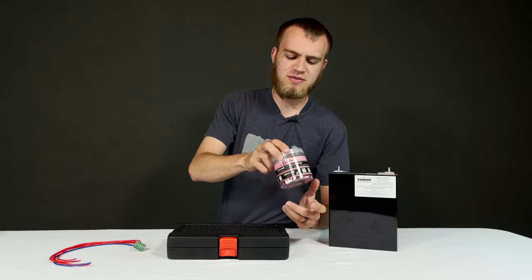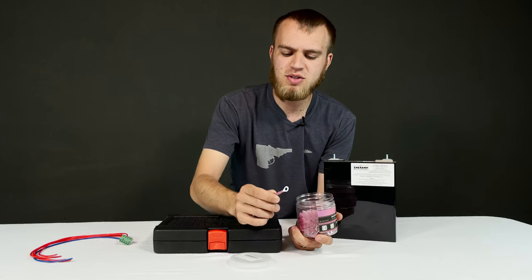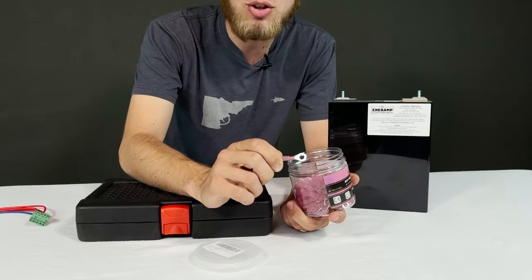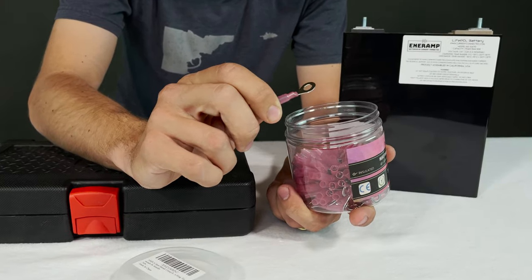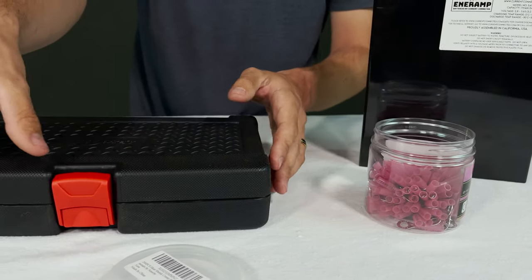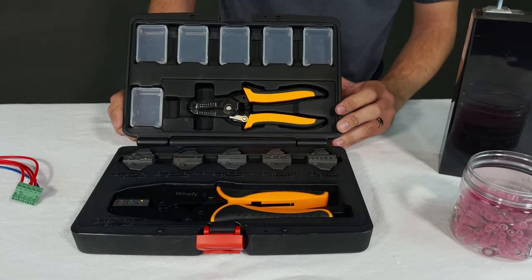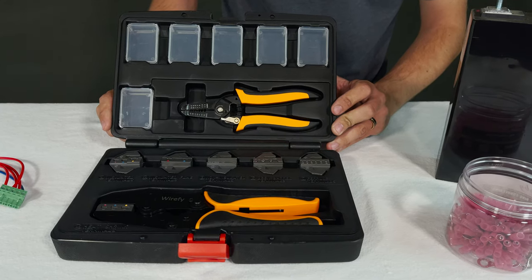In the case of today's video, we're using these crimp terminals. Now these ones are fancy and they have heat shrink tubing as part of them. And we also have a crimping tool that we're going to be showing and that is here inside this case. Now this is the wire fi kit and we're going to have a link for this down in the description.